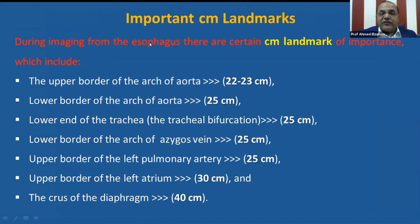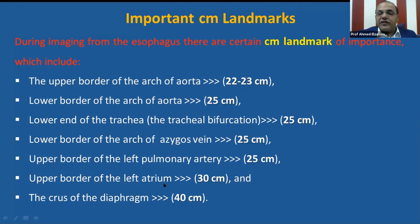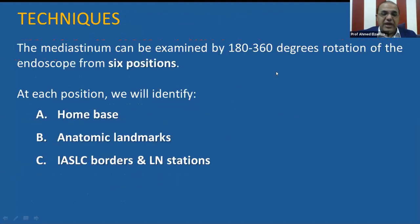During imaging from the esophagus, there are 13 centimeter landmarks of importance. The upper border of the arch of aorta is about 22 to 23 centimeters from the incisors. The lower border of the arch of aorta marks the end of the thoracic aorta. The lower border of the arch of azygous vein and the upper border of the left pulmonary artery are all at 25 centimeters from the incisors. The upper border of the left atrium is at 30 centimeters, and the crus of the diaphragm is about 40 centimeters from the incisors. The mediastinum can be examined by 180 to 360 degree rotation of the endoscope from six positions. At each position, we identify the home base, anatomical landmark, the address border, and lymph node station.